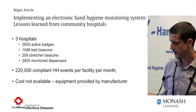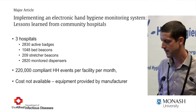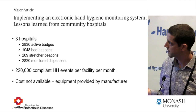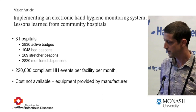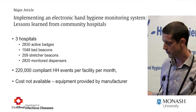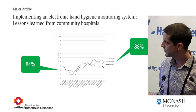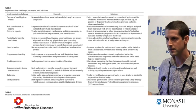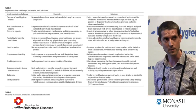This article came out this year in 2017, looking at implementation of this sort of system in three hospitals in the US. The numbers involved included badges, bed beacons, stretcher beacons, and monitored dispensers, with over 200,000 hand hygiene events collected per facility per month. We don't get a picture of the cost as materials were provided by the manufacturer. It showed an increase in compliance from 84% to around 90%. Most of the focus of this paper is actually about what to think about when implementing this system — the troubles they ran into and how they overcame those problems.